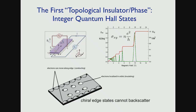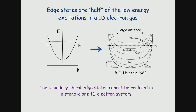This phase of matter has a very interesting property: the bulk is gapped, but at the boundary, because time-reversal symmetry is broken, electrons can only move in one direction. At one boundary, electrons move one way; at the other boundary, they move the other way. The edge state is chiral and cannot backscatter. Starting from a parabolic band structure and applying an orbital magnetic field, you get Landau levels. Near the boundary, the confining potential pushes energy levels up, creating edge states where a Landau level meets the Fermi energy.